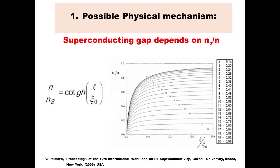Mean free path is equivalent to RRR. The fraction of superelectrons will no longer depend on mean free path or RRR when L over ξ is greater than 10, which corresponds roughly to RRR greater than 50, or better, greater than 100. So there is a theoretical argument stating that if you want to get rid of Q-slope, you must have RRR of at least more than 50.